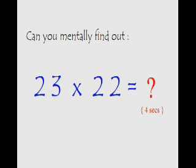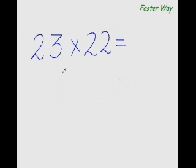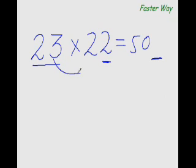Can you mentally find out what is 23 times 22 in 4 seconds? Your time starts now. Your answer is 506.